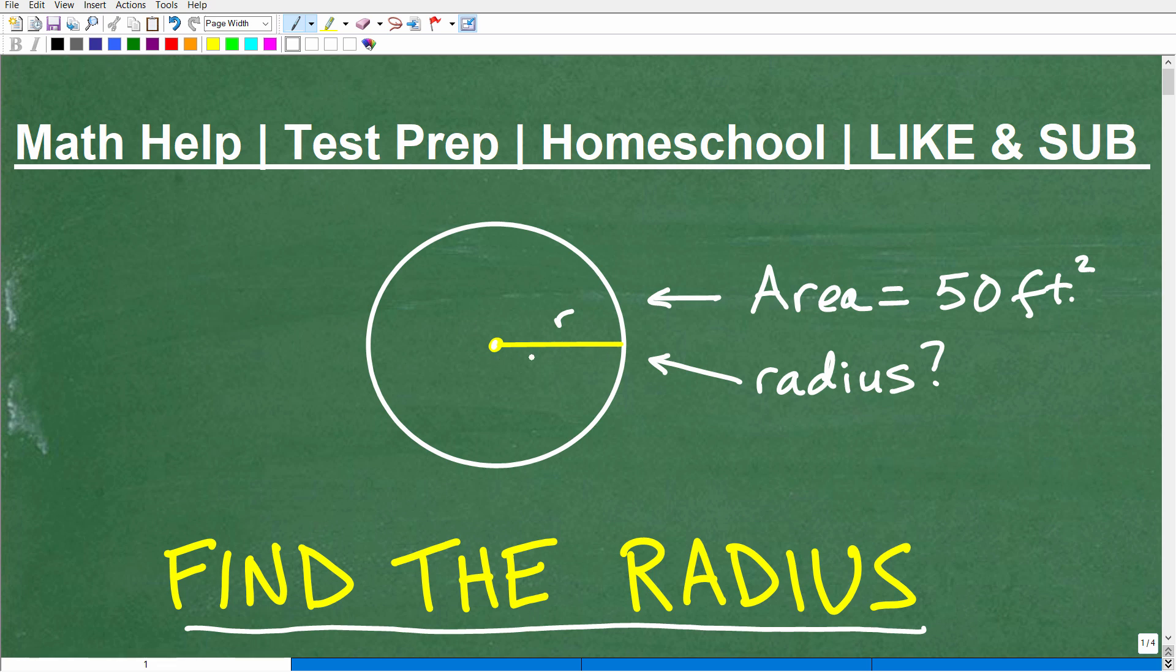Well, the radius is this part right here. You can see I have this little r, but the radius is half of the diameter, and the diameter is the whole width of the circle. It runs to the center of the circle. So this whole length right here, we would classify that as the diameter, okay?